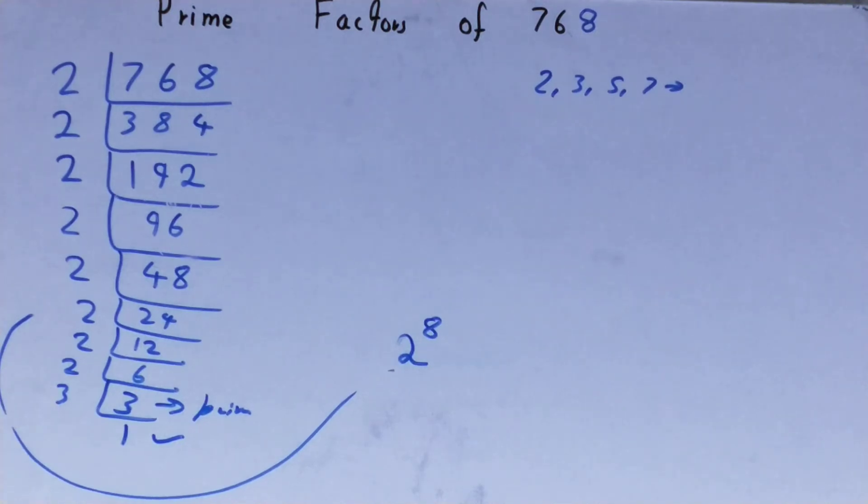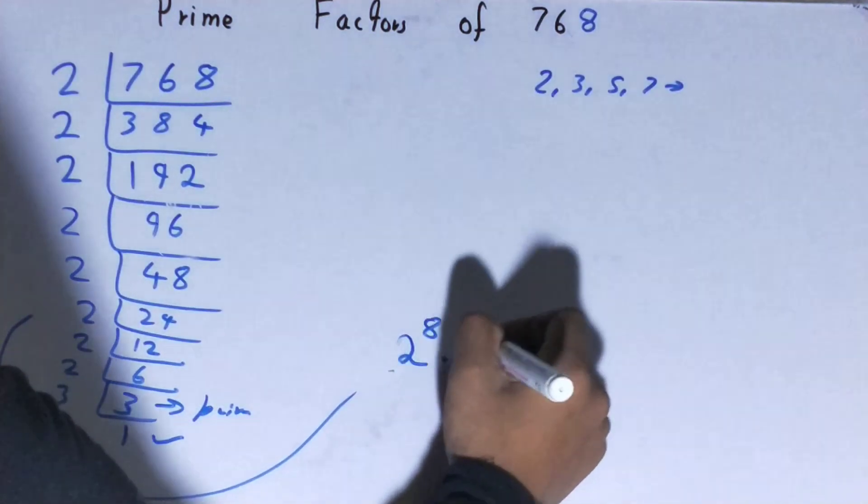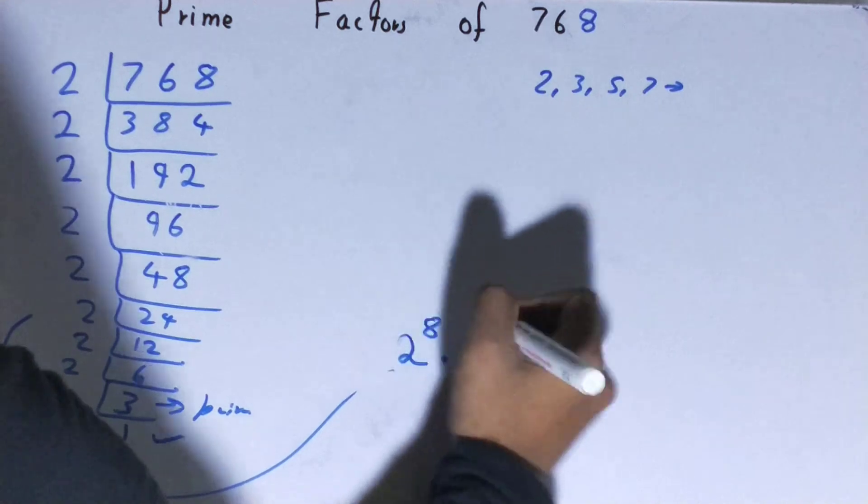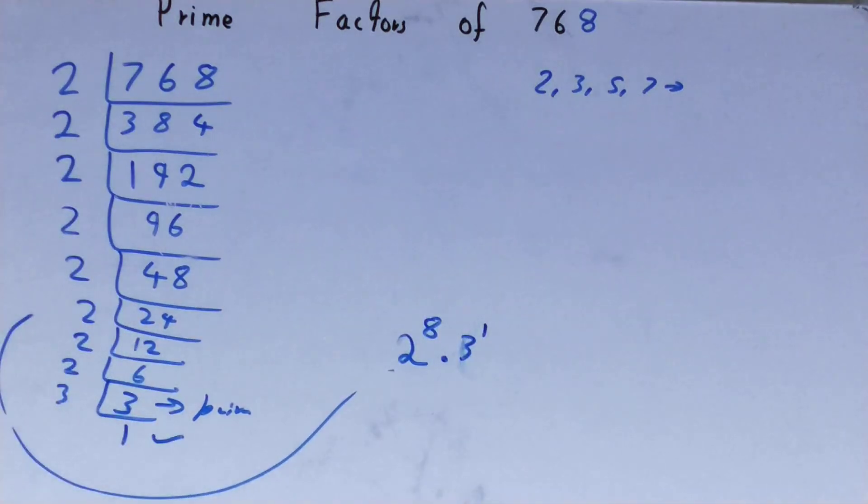We also have 1 three here, so we'll multiply it by 3 raised to power 1. You can write it this way or the normal way, but the normal way will be lengthy, so I wrote it this way. This was all about prime factors of 768.